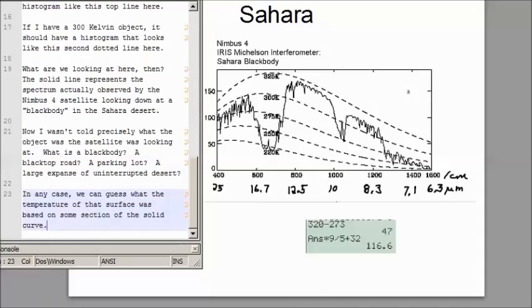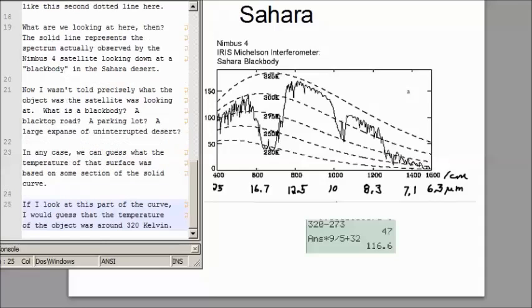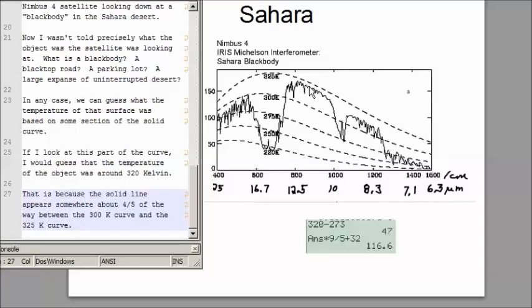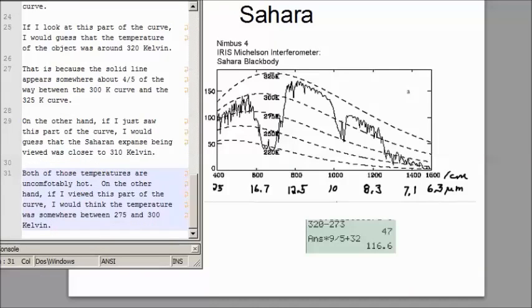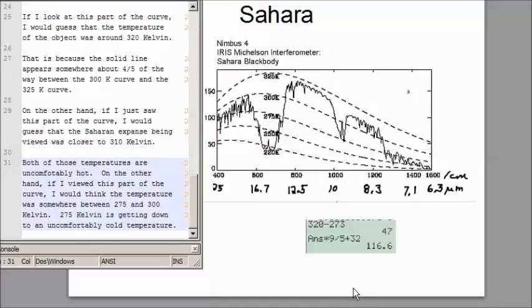In any case, we can guess what the temperature of that surface was based on some section of the solid curve. If I look at this part of the curve, I would guess that the temperature is somewhere around 320 Kelvin. That is because the solid line appears about four-fifths of the way between the 300 Kelvin curve and the 325 Kelvin curve. On the other hand, if I just saw this part of the curve, I would guess that the Sahara expanse being viewed was closer to 310 Kelvin. Both of those temperatures are uncomfortably hot. But on the other hand, if I viewed this part of the curve, I would think that the temperature was somewhere between 275 and 300 Kelvin. 275 Kelvin is getting down to an uncomfortably cold temperature.